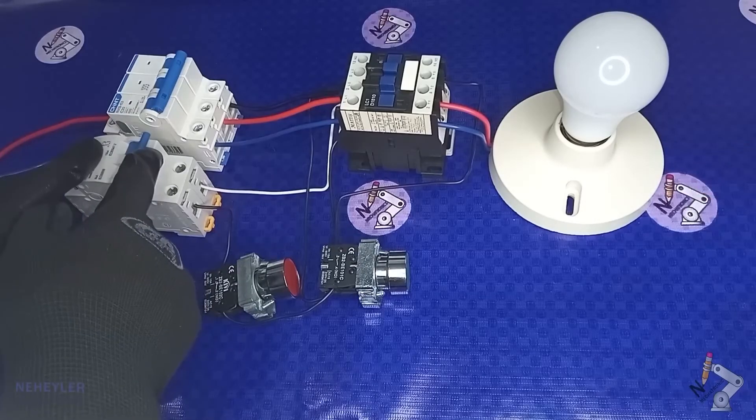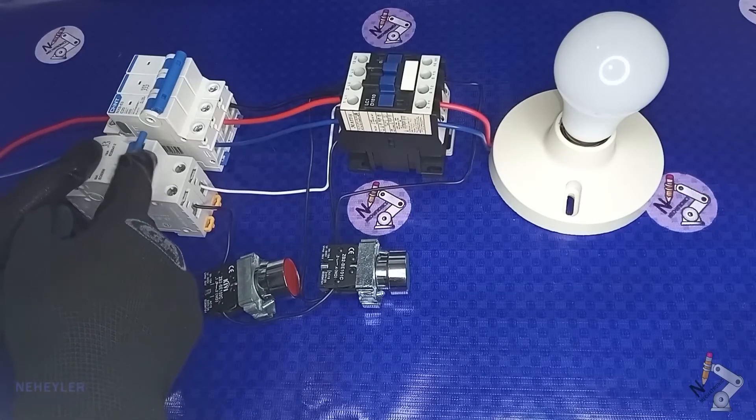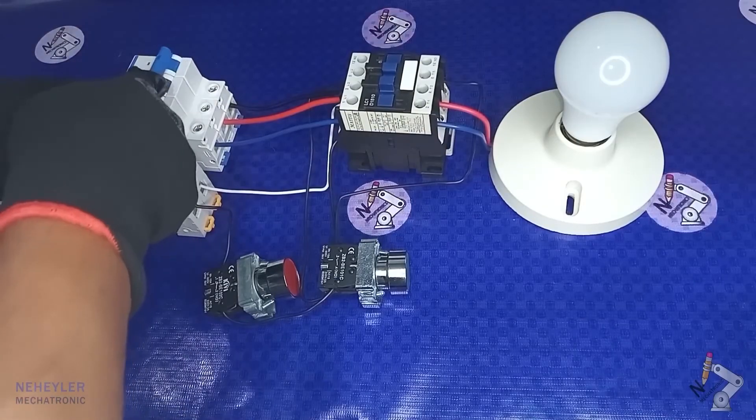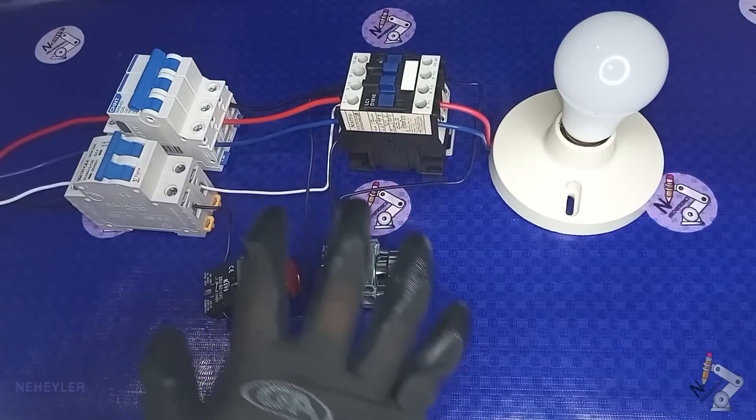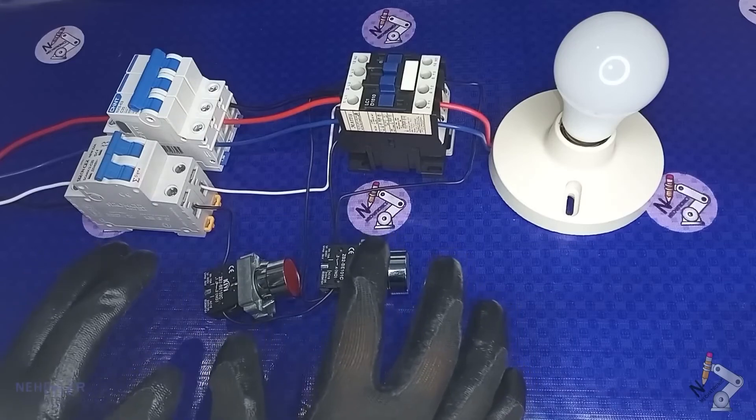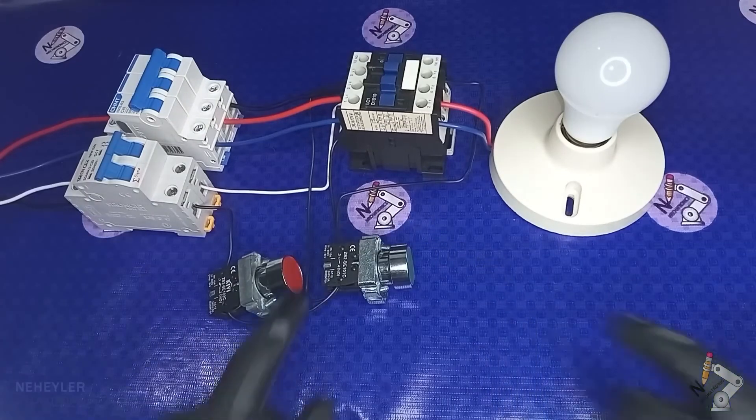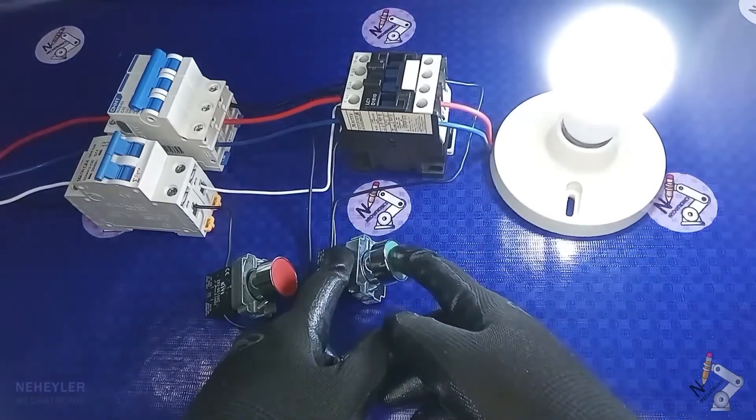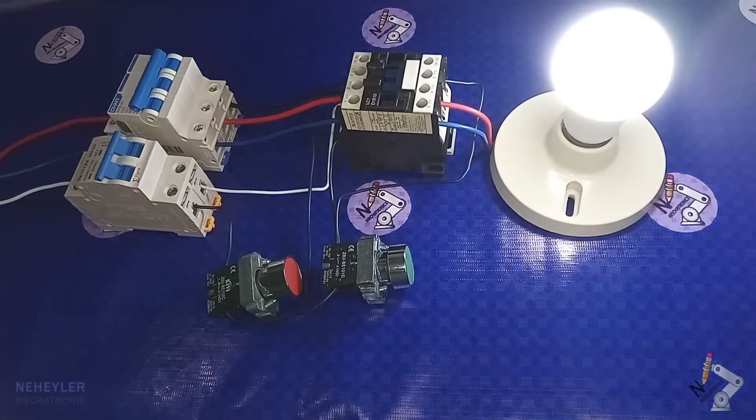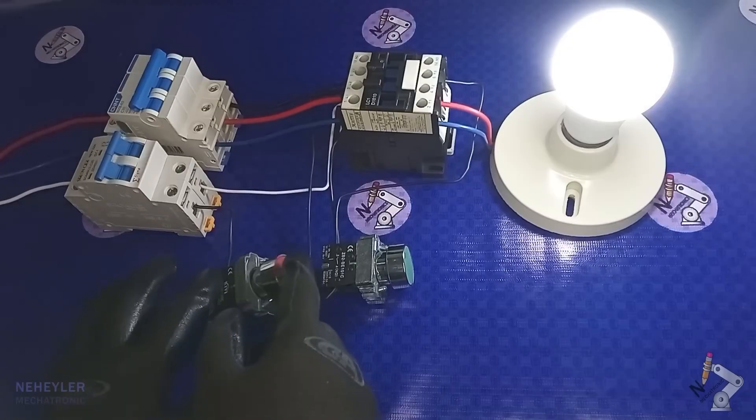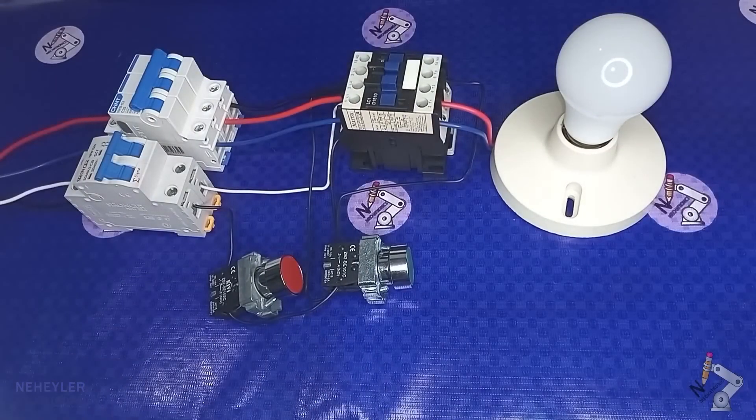We test the circuit, we turn up the switch's lever. Up to this point, we already have everything energized, ready to do the corresponding test. We press the start button, and as we see, the light bulb turns on. This means that the contactor coil remains stuck and will remain so until the stop button is pressed. We press the stop button, and as we see, the light bulb turns off, since the contacts of the contactor return to their default position, which is open.